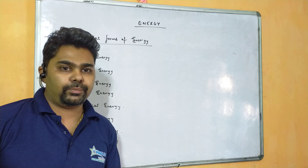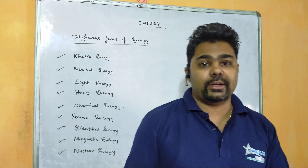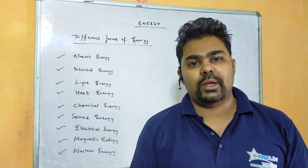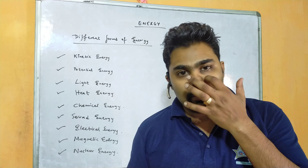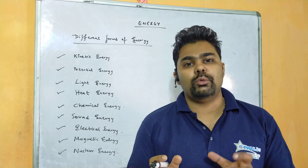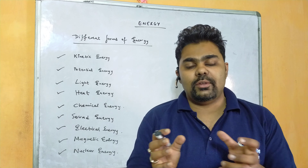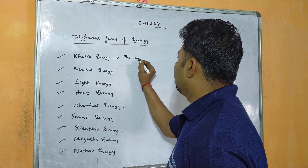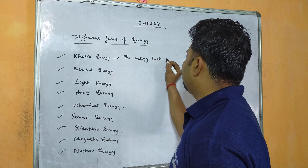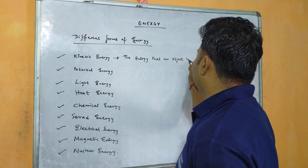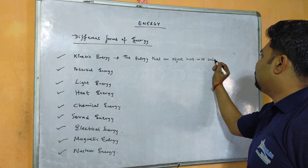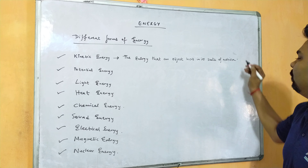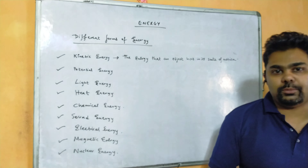Kinetic energy is the energy possessed by an object due to its motion. For example, a boy running on the road is in motion, so the energy he possesses is kinetic energy. We define kinetic energy as the energy that an object has in its state of motion.